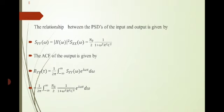The relationship between the PSDs of input and output is given by Syy of omega equal to modulus H of omega the whole square Sxx of omega, that is equal to n0 by 2 into 1 by 1 plus omega square r square c square.